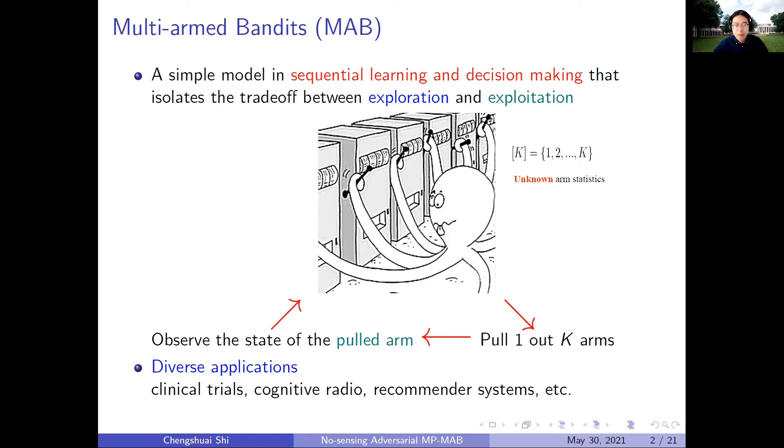Then she observes the reward of the pulled arm and uses this information for decision-making in the future. While being simple, this model has found applications in clinical trials, cognitive radio, recommender systems, and more.